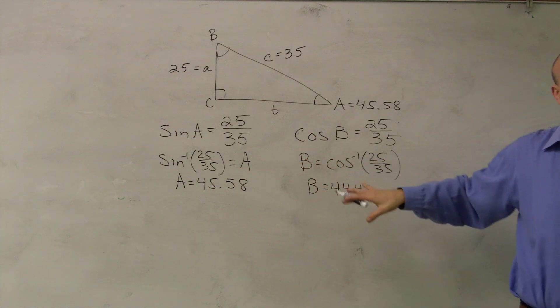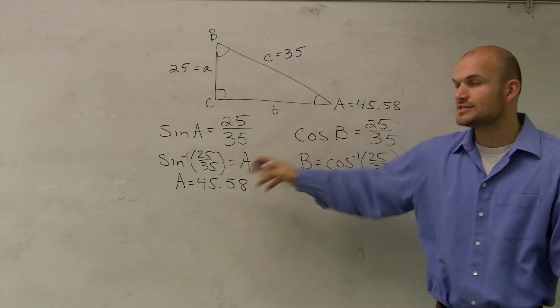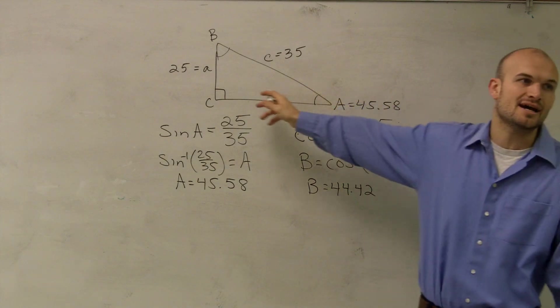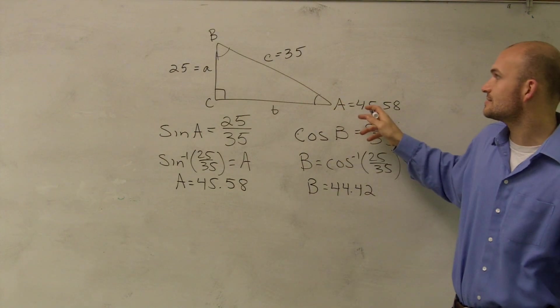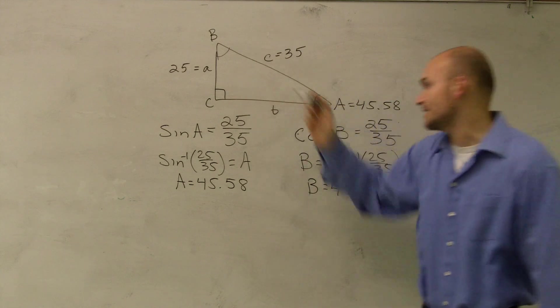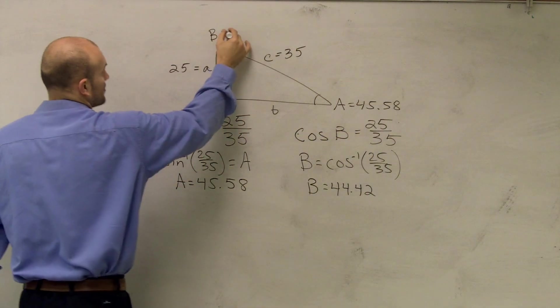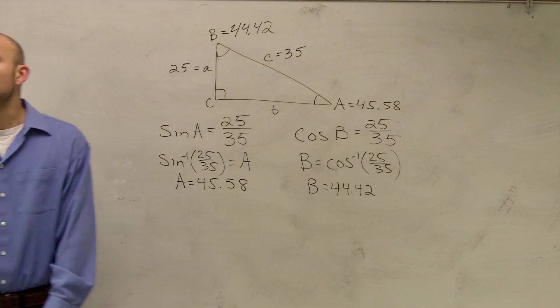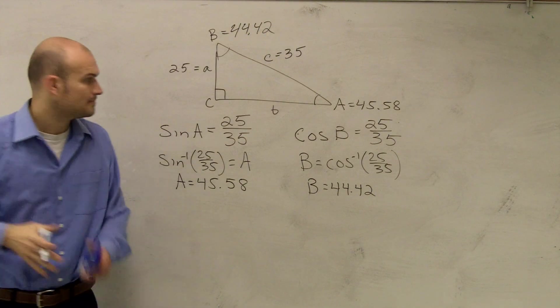All right. Now like I said, guys, I'm just rounding these to get my correct answers. But you guys notice, now that's how I got my two angles. Make sense? You could have easily, guys, just once you figured out this, added to 90 and subtract from 180 to get 44.42. You guys have a question? Sam, you have a question? No. Okay.